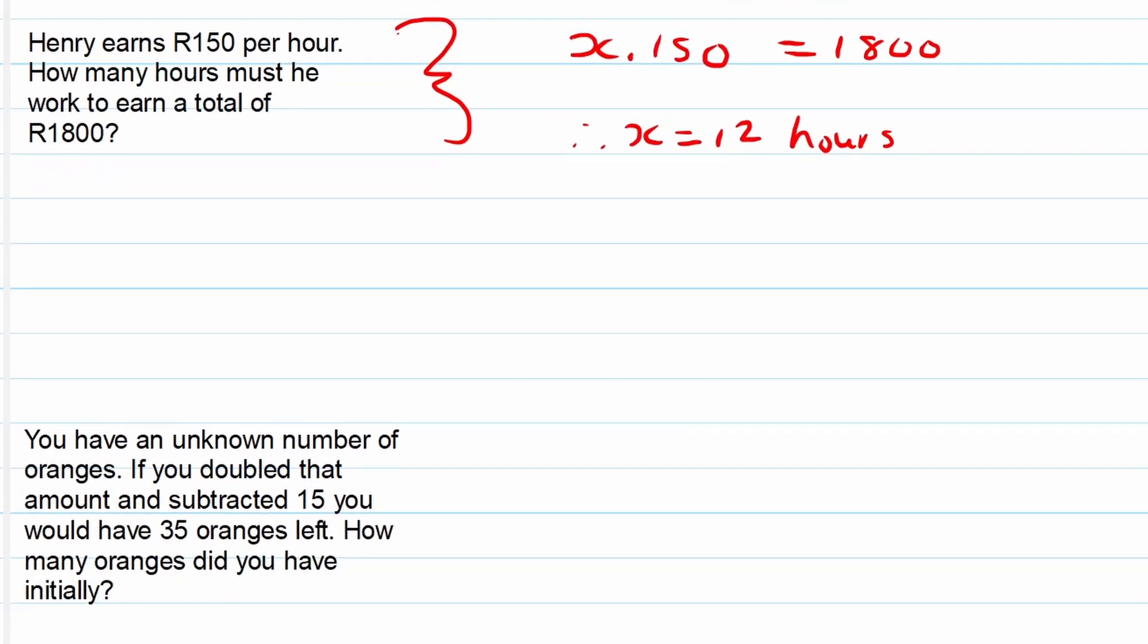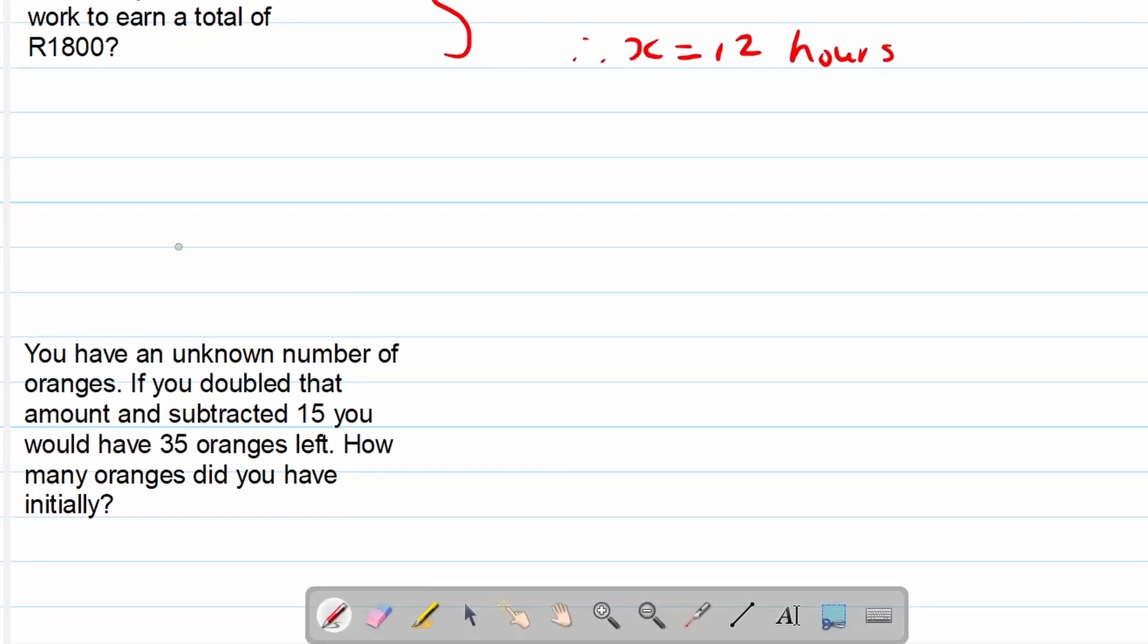Let's look at the second and the last example for this video. You have an unknown number of oranges. If you double that amount and subtracted 15, you would have 35 oranges left. How many oranges did you have initially? So let's look. Unknown, we'll make that an x again. If we double that, in other words 2 times x, and subtract 15, we will have 35 oranges left. You can see here the left hand side and the right hand side.